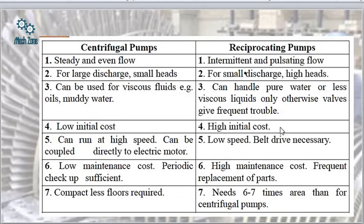Centrifugal pumps have low initial cost while reciprocating pumps have high initial cost. Centrifugal pumps can run at high speed and can be coupled directly to an electric motor; reciprocating pumps run at low speed and require a belt drive. Centrifugal pumps have low maintenance cost and periodic checkup is sufficient; reciprocating pumps have high maintenance cost with frequent part replacement. Centrifugal pumps require compact floor space, whereas reciprocating pumps need 6 to 7 times more area — so if space is a constraint, centrifugal pumps are preferred.